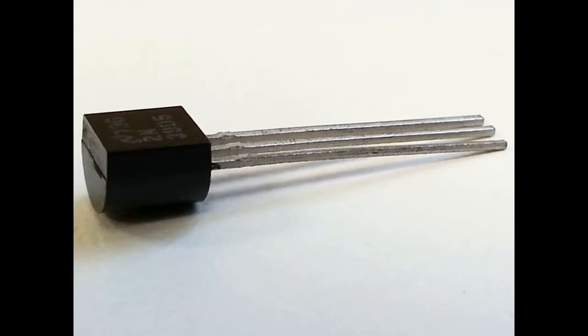Like vacuum tubes, transistors help electricity flow and turn on and off in patterns. But unlike vacuum tubes, they're hundreds of times smaller, so you can use lots of them in circuits that are connected to each other.